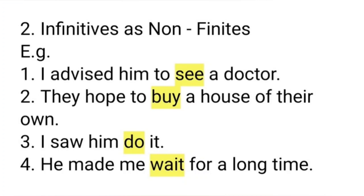Second type: infinitives as non-finites. See the examples: 'I advised him to see a doctor.' 'They hoped to buy a house of their own.' 'I saw him do it.' 'He made me wait for a long time.' The underlined words are called infinitives. In the first and second sentences, the infinitive has 'to' before it — these are called to-infinitives. In the third and fourth sentences, the infinitive does not have 'to' before it — these are called bare infinitives. Bare infinitives are used after auxiliaries like shall/should, will/would, may/might, do/did, can/could, must, need, and dare.